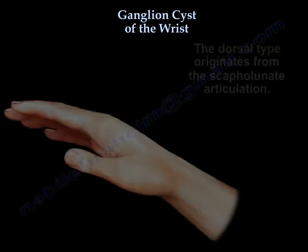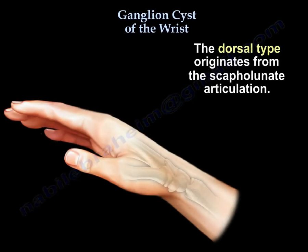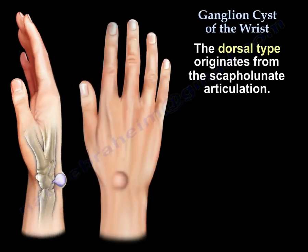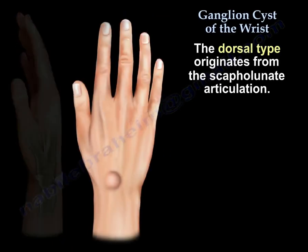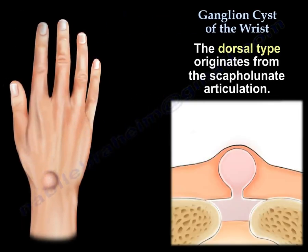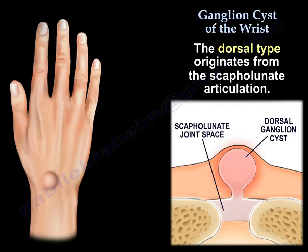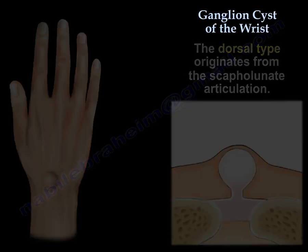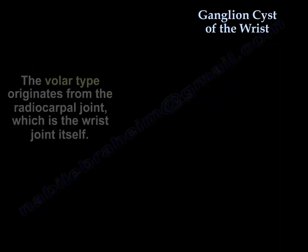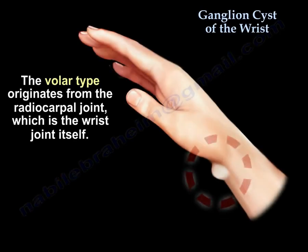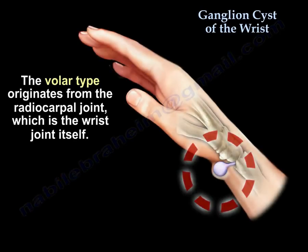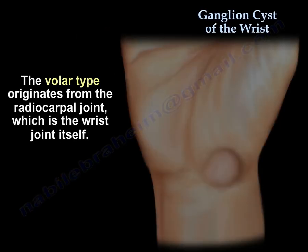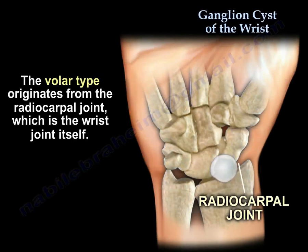The dorsal type originates from the scapholunate articulation. The volar type originates from the radiocarpal joint, which is the wrist joint itself.